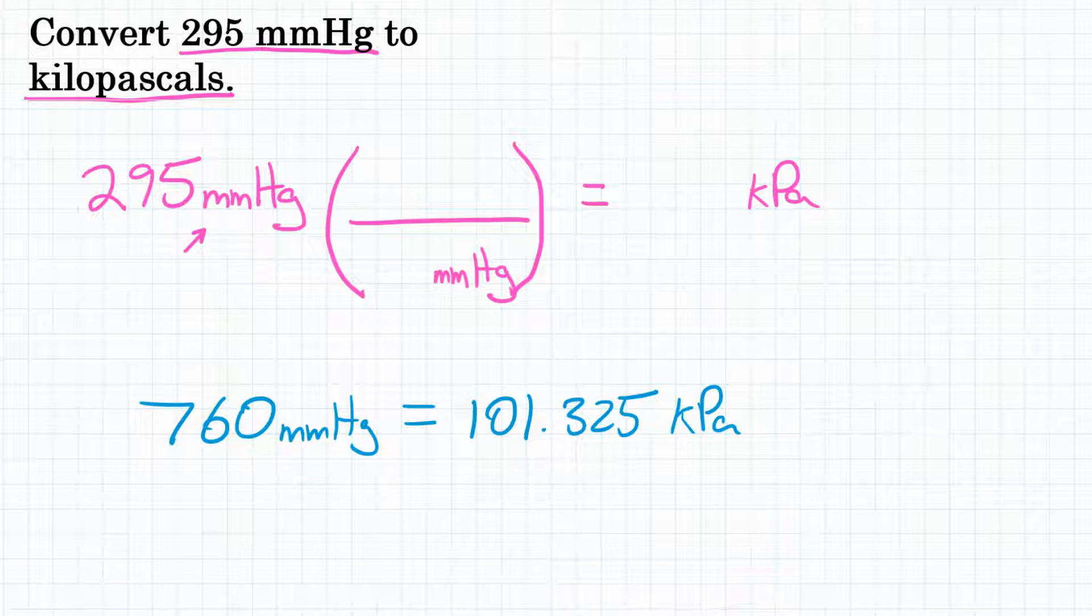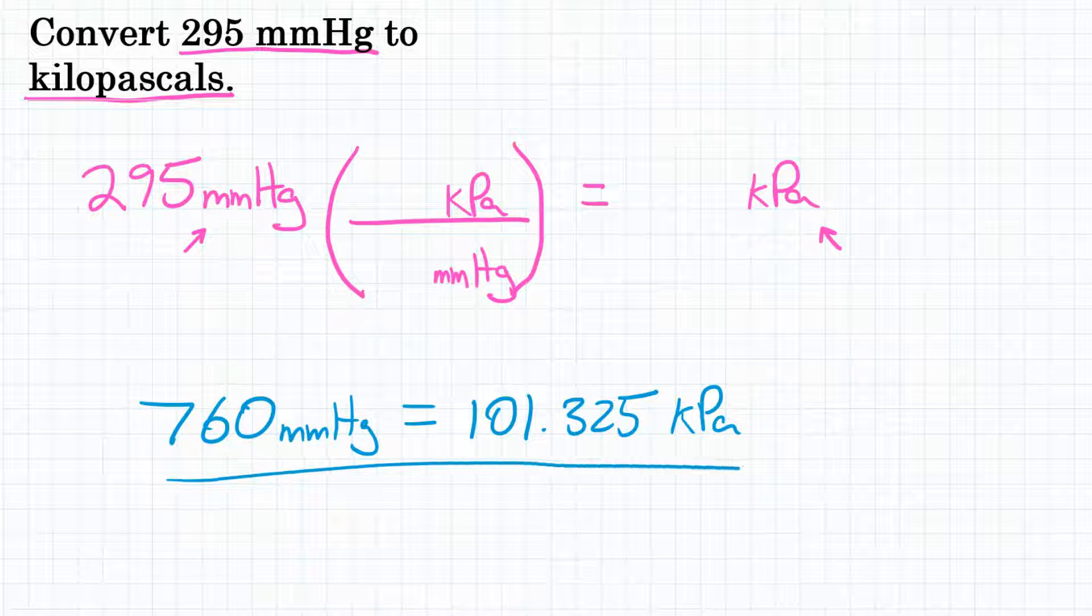The unit we want is kPa, so that unit is going to go on top. And then what is this relationship? Well, that was below here. 760 millimeters of mercury is equal to 101.325 kPa. So that is how we set our conversion factor up.